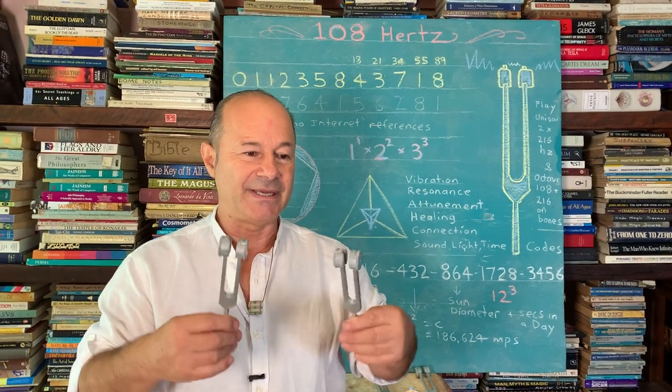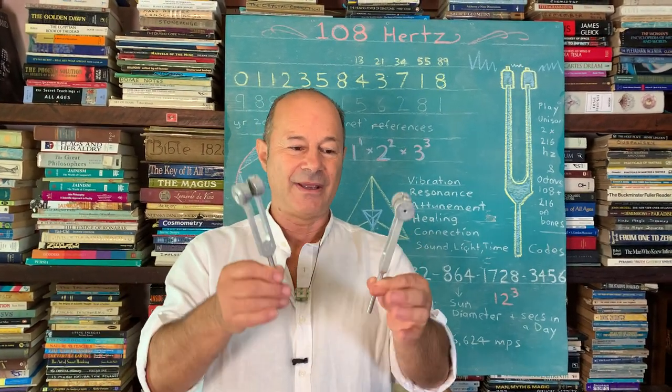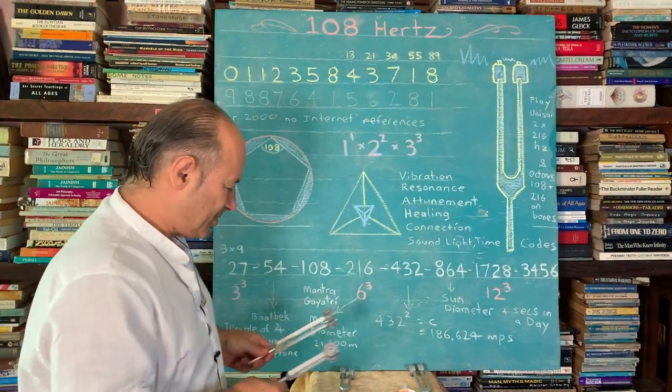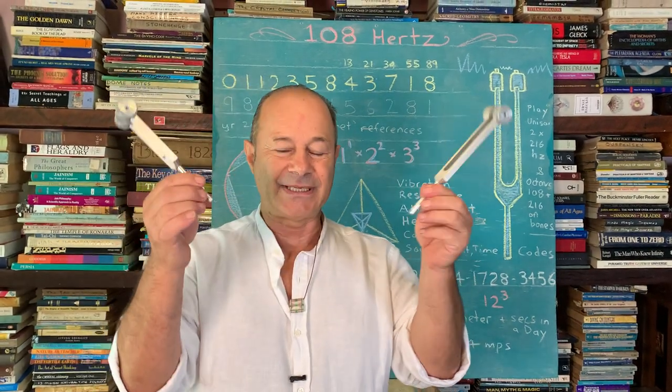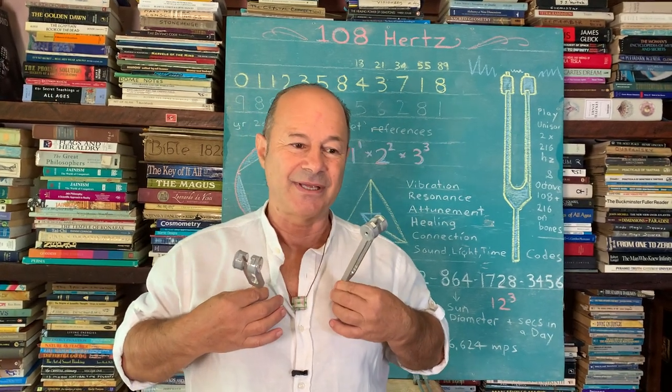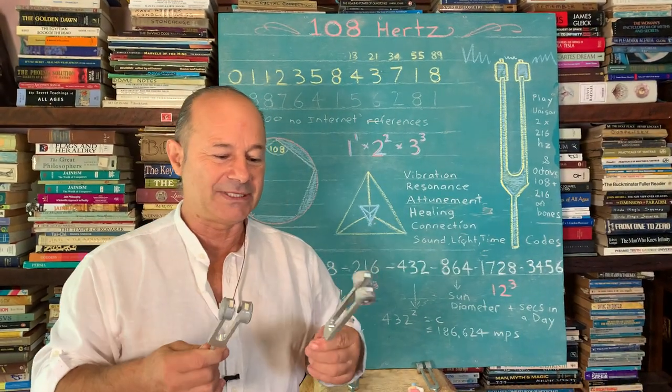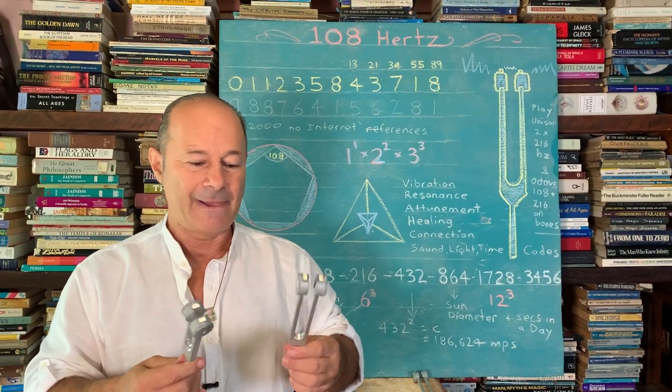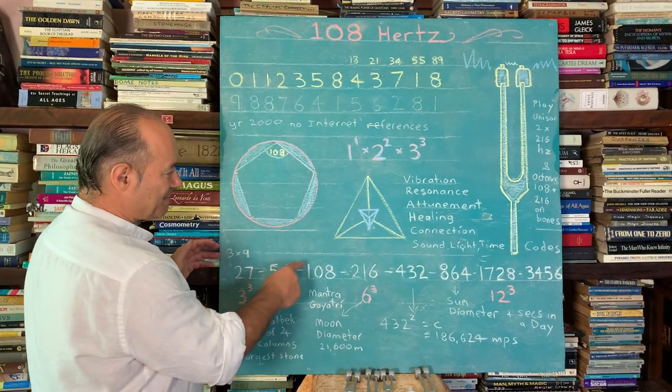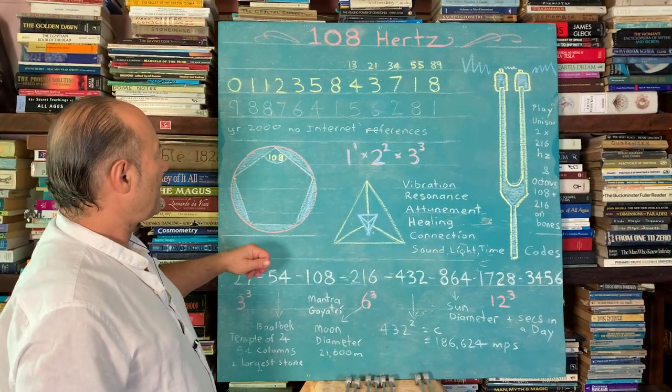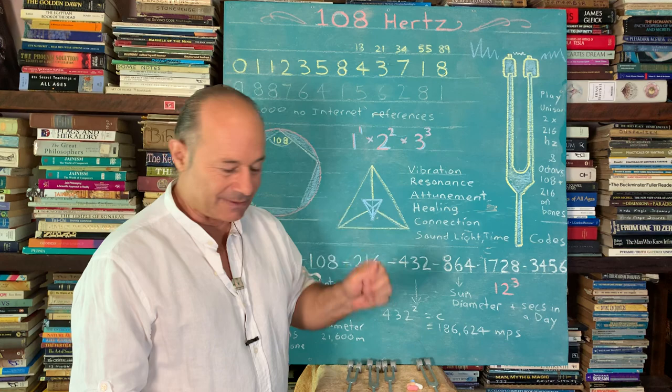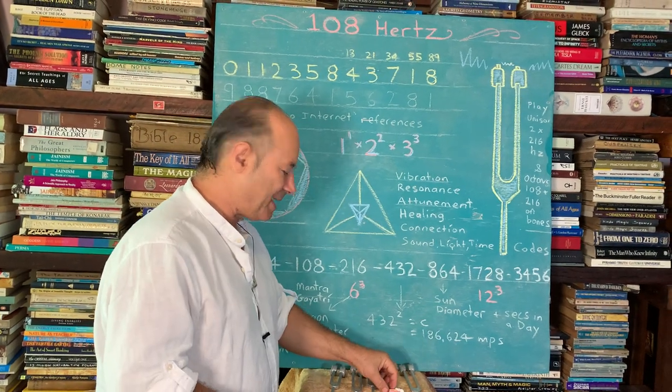If I need equanimity or calmness, I work with the unison 216. If I work with 108 and 216 together, they're in the ratio 1:2 and it's doing something different. We're still at the early stages of understanding frequency and harmonics. The best way is to start with all these special numbers.